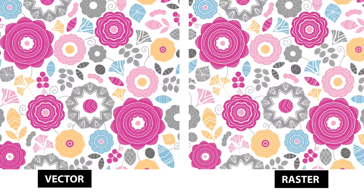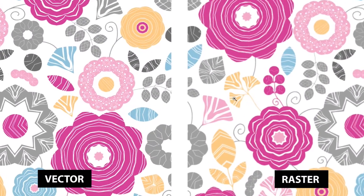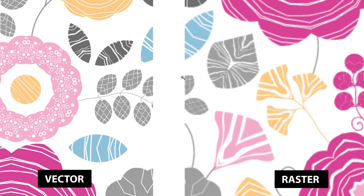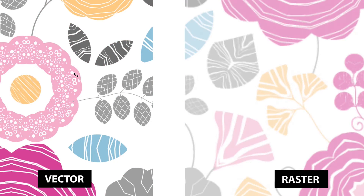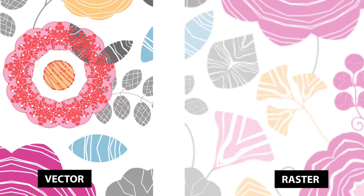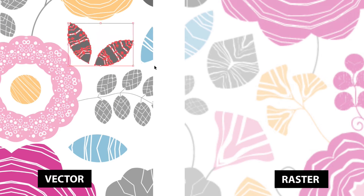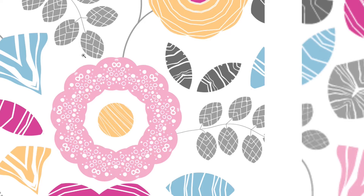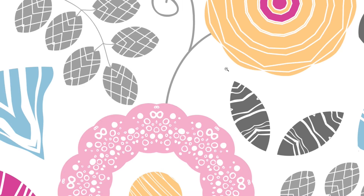Originally, these two look identical on screen — they are both opened in Adobe Illustrator. But if I zoom in on them at the same time, you can see there is a difference: the raster becomes pixelated while the vector stays nice and crisp. So this is basically where you can already see the difference.